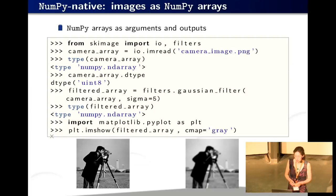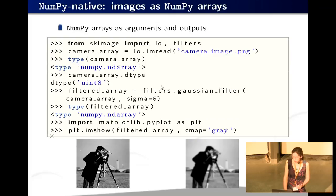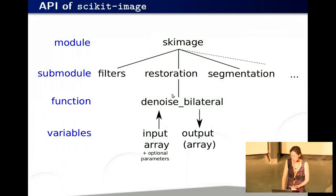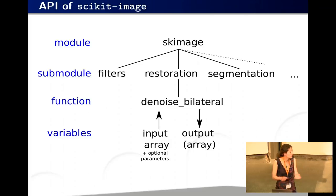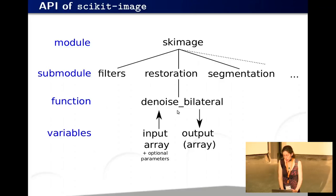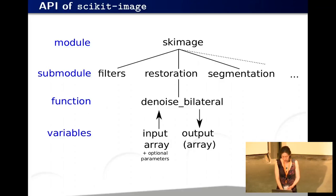The API of scikit-image is quite simple — it relies mostly on functions. You have modules with functions like the Gaussian filter, and these functions operate on NumPy arrays and mostly return NumPy arrays as output. You import scikit-image as skimage, then access sub-modules like skimage.filters or skimage.restoration. The namespace is not completely flat — you always find functions inside sub-modules. Functions operate on NumPy arrays and output NumPy arrays, or sometimes scalar values like a threshold.